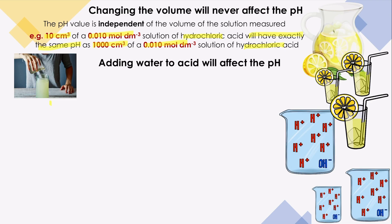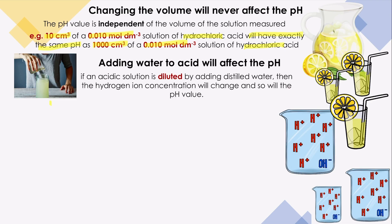The only thing that might affect the pH is dilution — adding distilled water. If you add more water to this jug of lemon juice, the taste will certainly differ. If you add a reasonable amount of water, the taste will be different. So if an acidic solution is diluted — and dilution means addition of distilled water — then the hydrogen ion concentration will change, and so will the pH value.